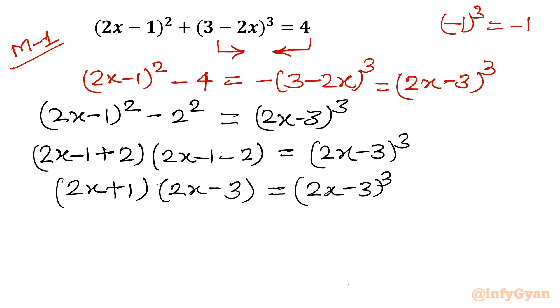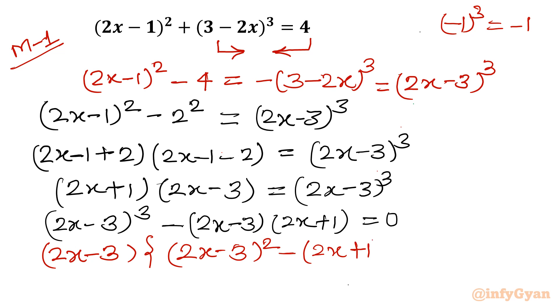Now I will take all the terms to the RHS. So it will become (2x - 3)³ - (2x - 3)(2x + 1) = 0. Obviously (2x - 3) is common. So once I will take (2x - 3) common, I will write inside the bracket (2x - 3)² - (2x + 1) = 0. f·g = 0, that means either (2x - 3) = 0 or (2x - 3)² - (2x + 1) = 0.